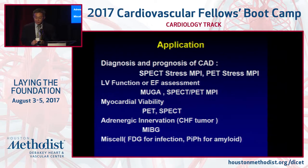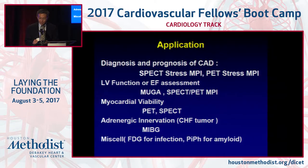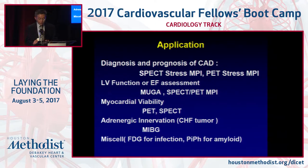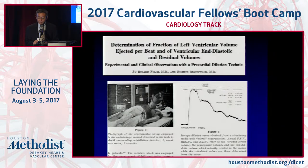We don't do PET, but in other centers it's commonly used. LV function assessment used to be the workhorse of nuclear medicine 30 years ago; now we rarely do it. However, it's part of the information we obtain from myocardial perfusion imaging. Viability, adrenergic innervation, and pyrophosphate for amyloidosis are also coming as strong indications, but because of time I'm going to focus my talk on stress myocardial perfusion imaging for diagnosis of coronary disease.